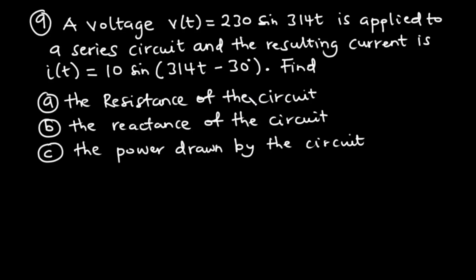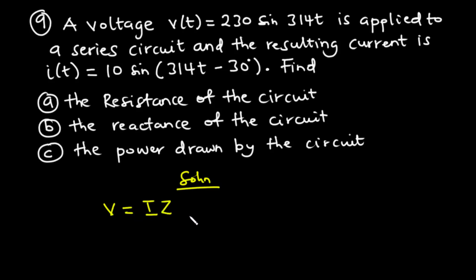What this means is that for this circuit, we have the resistance and the inductive reactance. So the impedance of this circuit is made up of the resistance and the inductive reactance — that is what we are going to find in A and B. Now according to Ohm's law, V equals I times Z, so Z equals V over I.